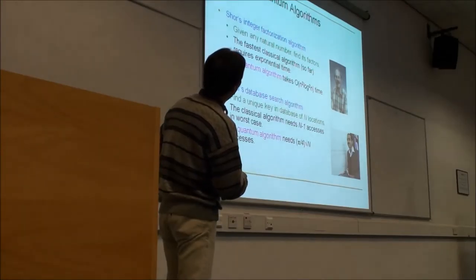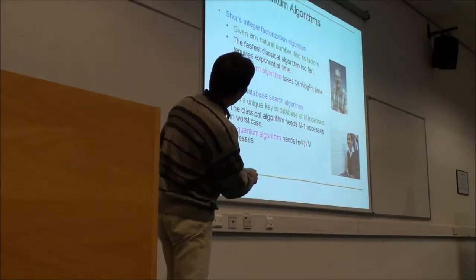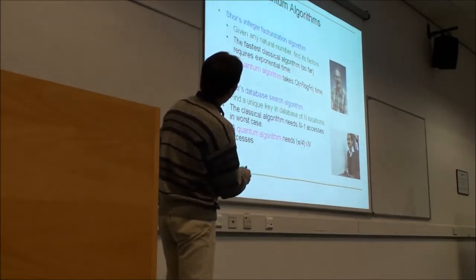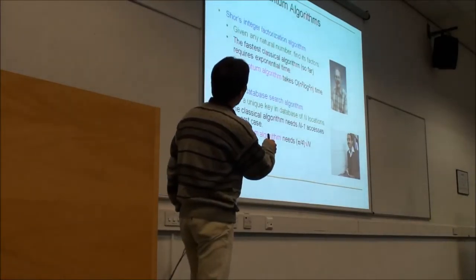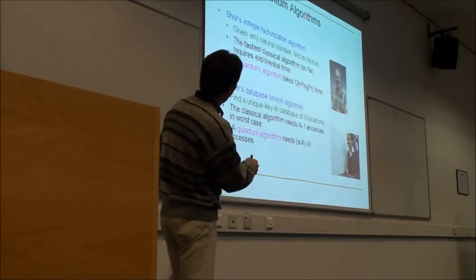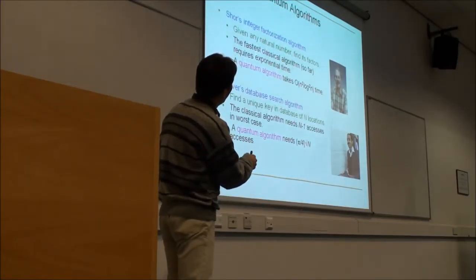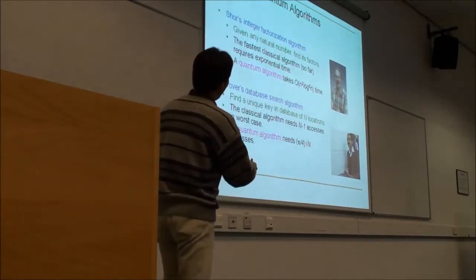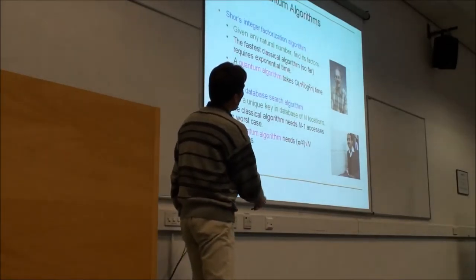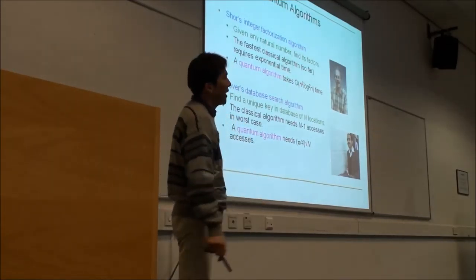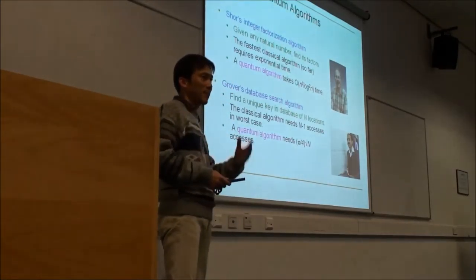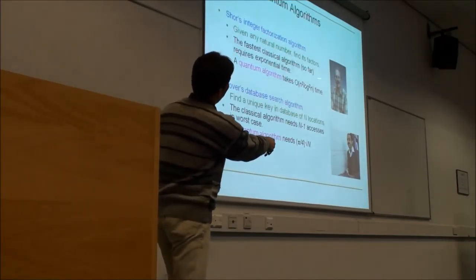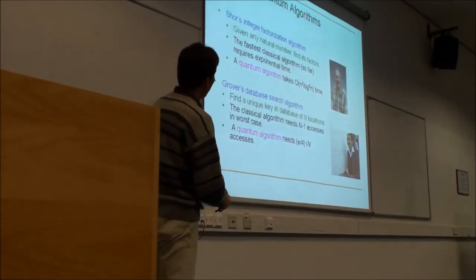I don't have much time to explain the very famous quantum algorithms, but briefly: Shor developed a very interesting quantum algorithm that actually solves the factorization problem. In the classical sense, factorization requires exponential time. But using Shor's quantum algorithm, it takes only O(n squared log n squared) time, where n is the size of the given input — a polynomial time algorithm.